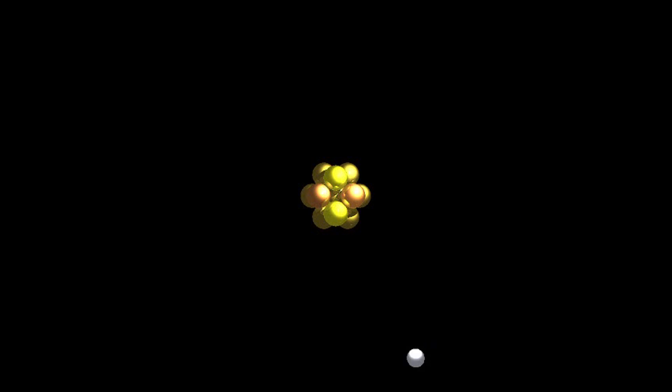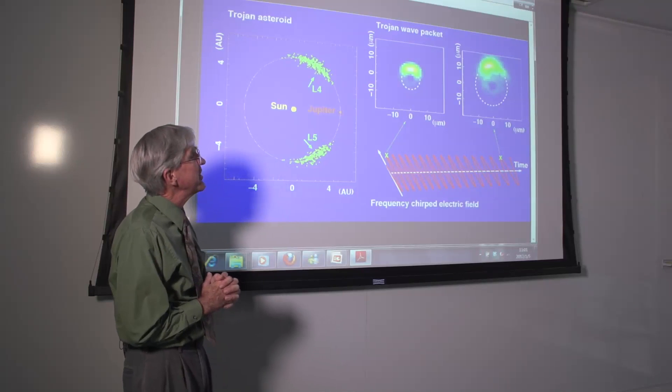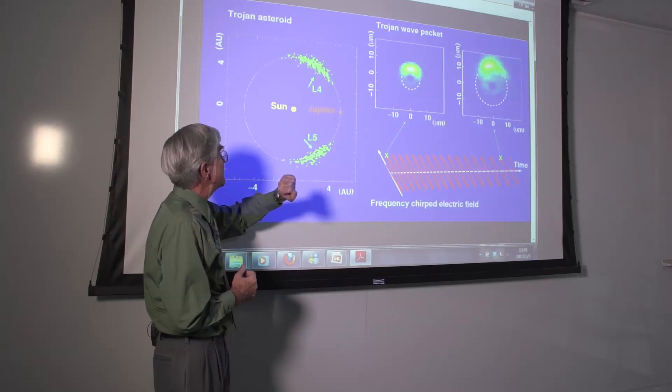Such atoms behave much as a classical system, and using them, it has been possible to reproduce in atoms effects that are seen in the solar system. In particular, we've been able to create electronic wave packets whose behavior mimics that of the Trojan asteroids.